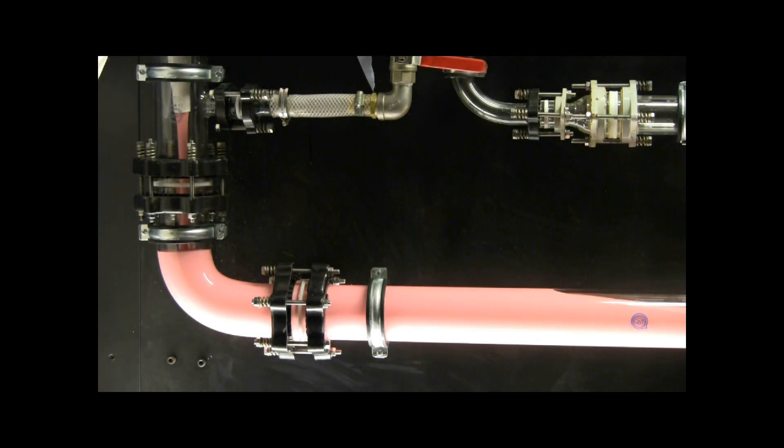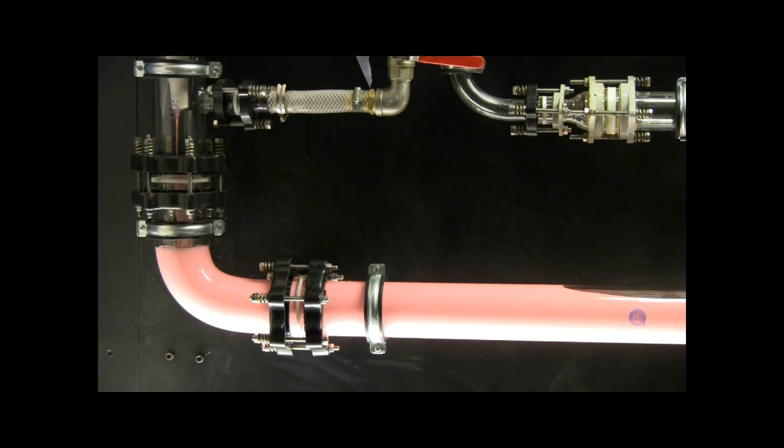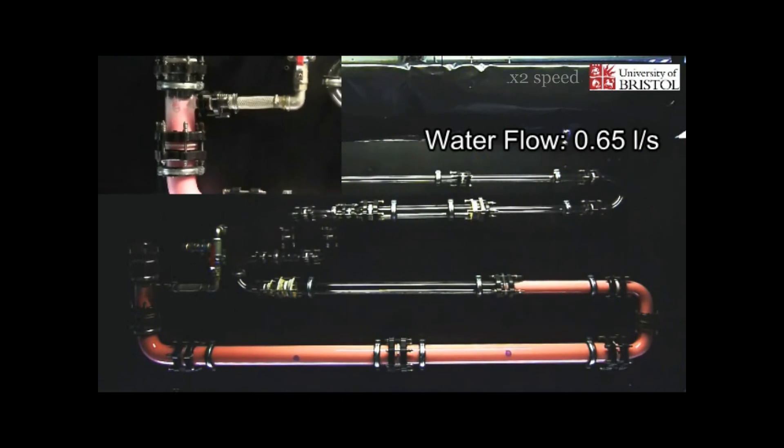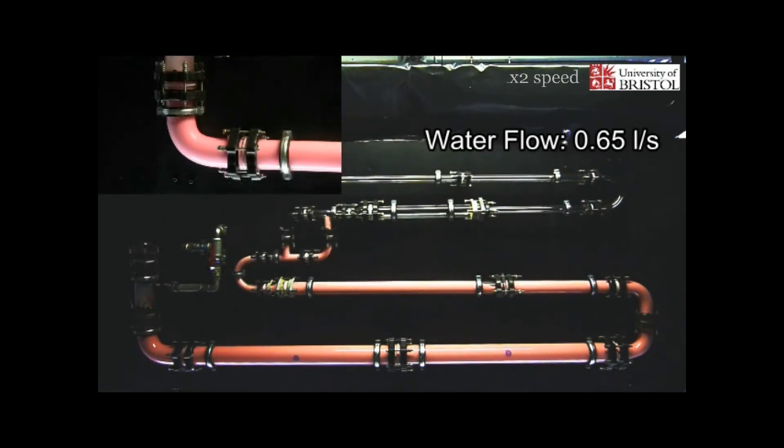The 3-inch diameter section of the complex pipe circuit is filled with approximately 20 liters of yoghurt. The yoghurt is then displaced using mains water.